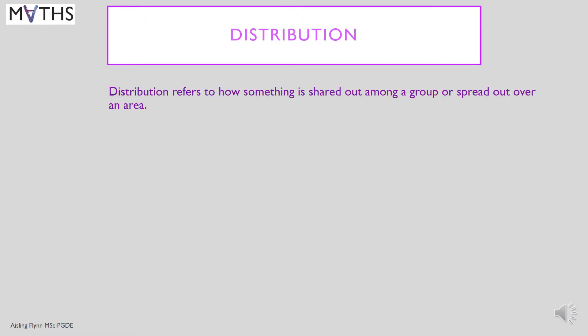The word distribution refers to how something is shared out among a group or spread out over an area. In statistics when we ask a question we can get many numbers in reply. We look to find generalities in the replies.